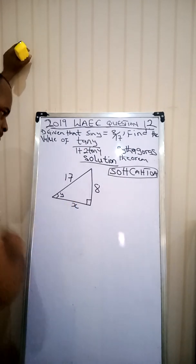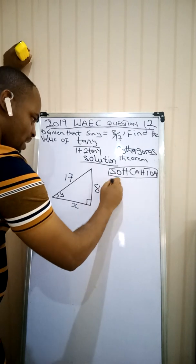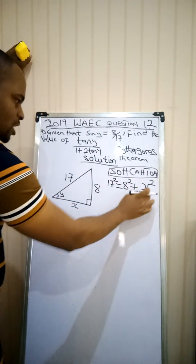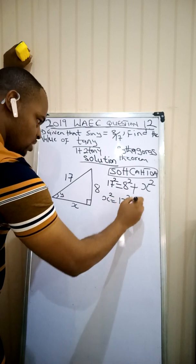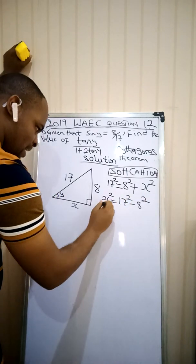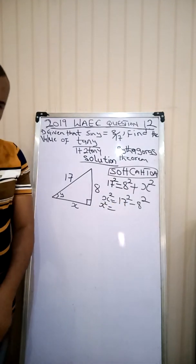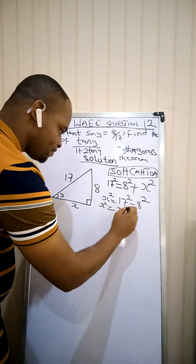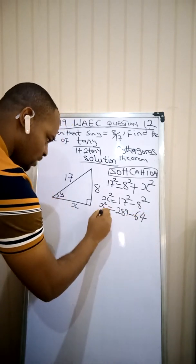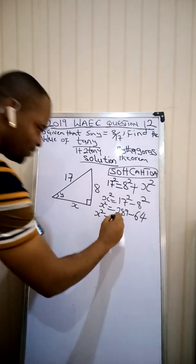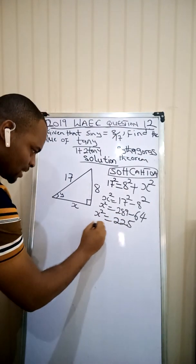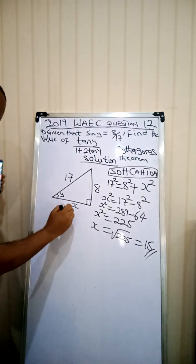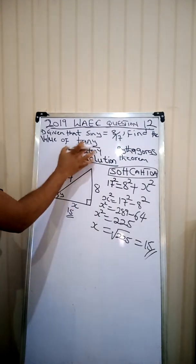Let's call the adjacent side X. By the Pythagorean theorem, hypotenuse squared — 17 squared — equals opposite squared plus adjacent squared. So X squared equals 17 squared minus 8 squared. That gives us X squared equals 289 minus 64, which is 225. Taking the square root of 225 gives us 15. So we've found this side is 15.